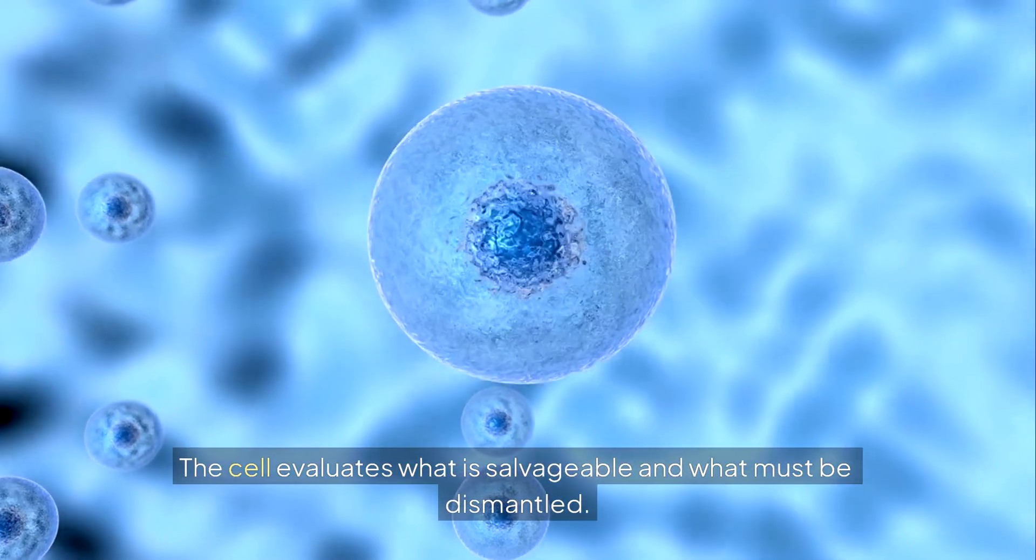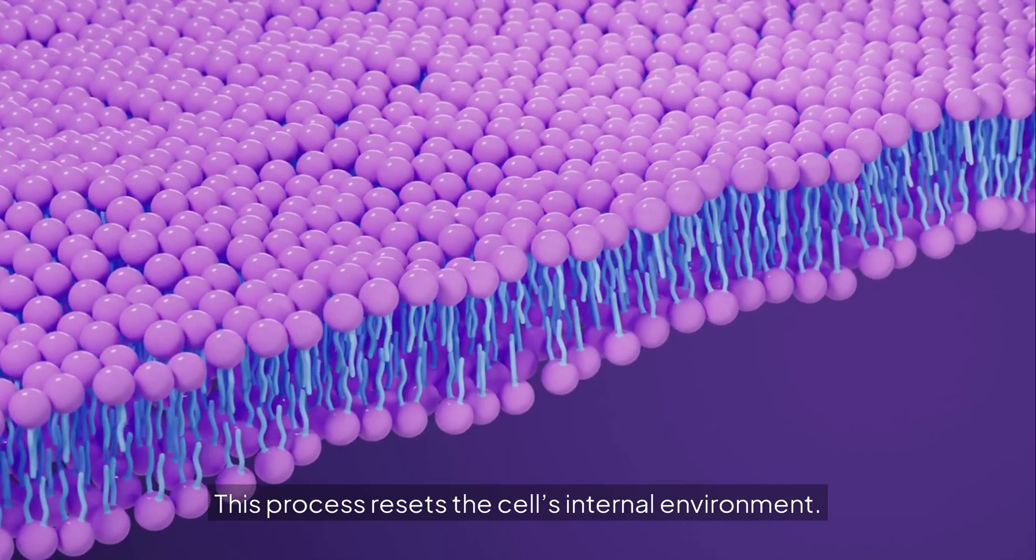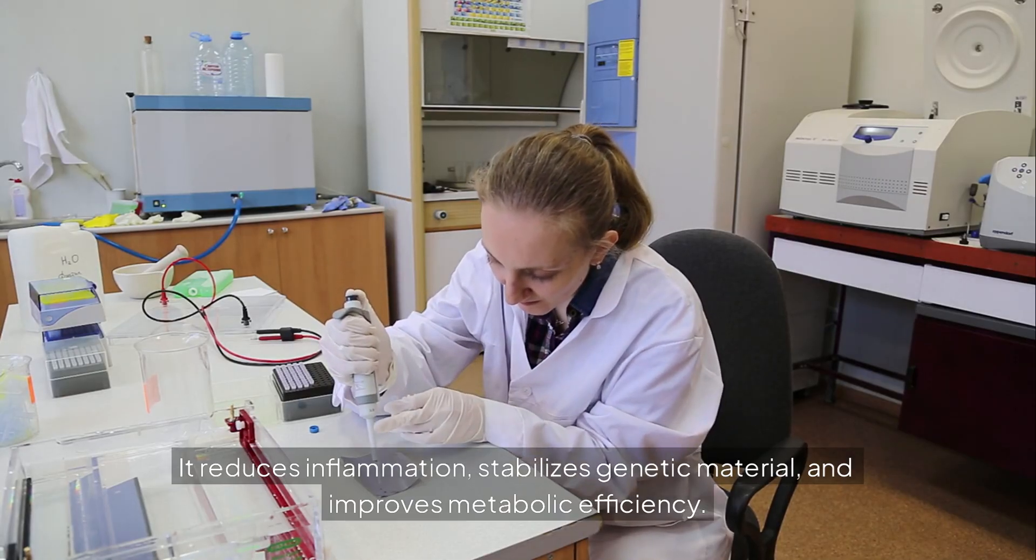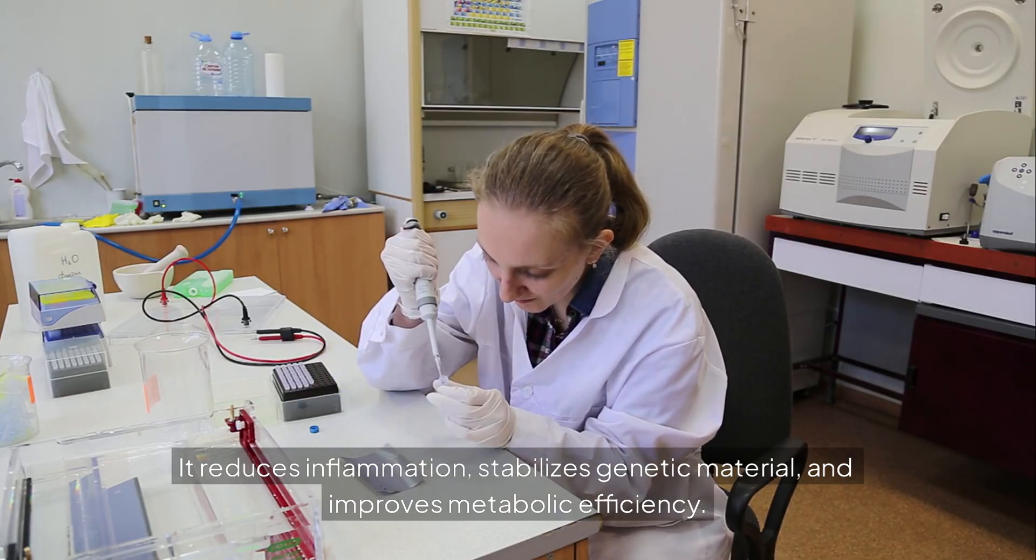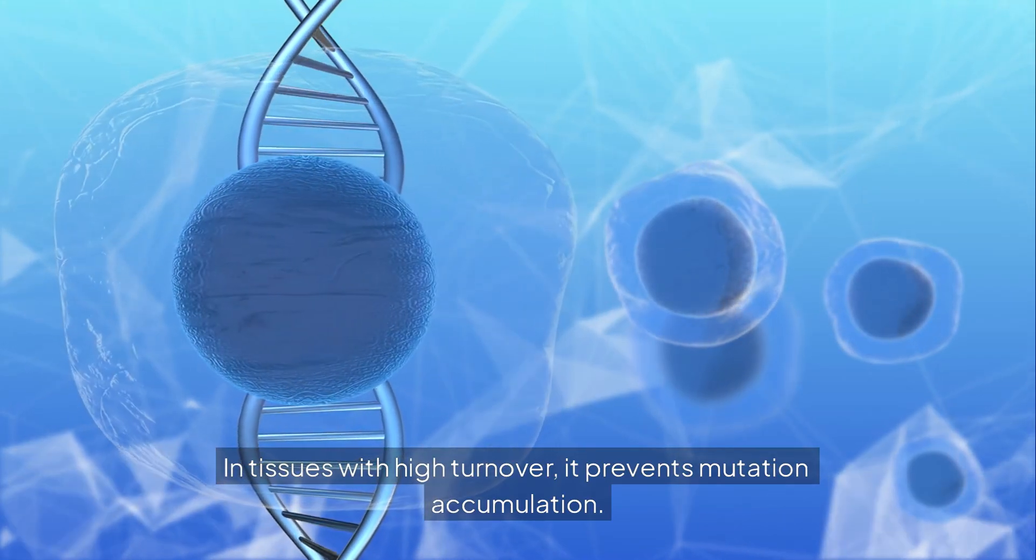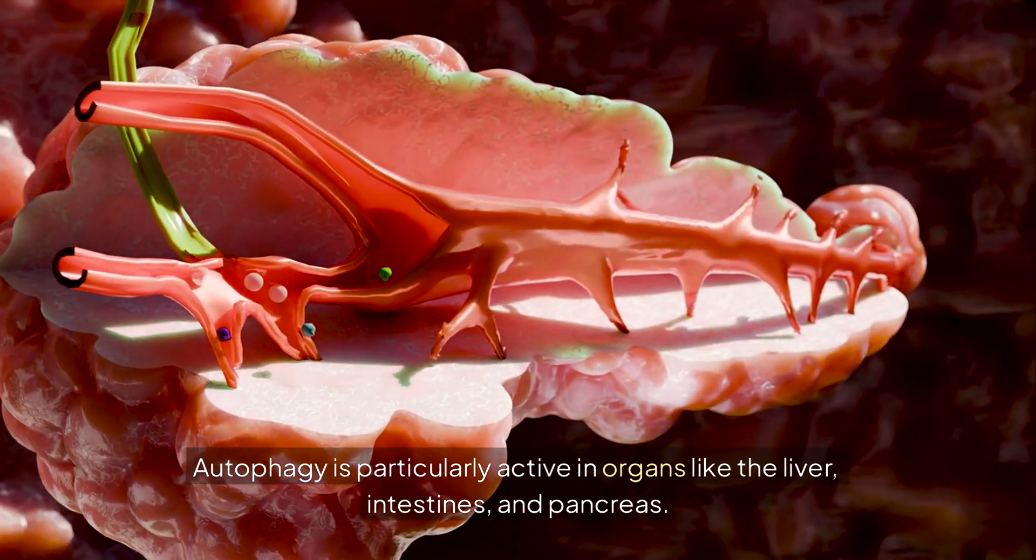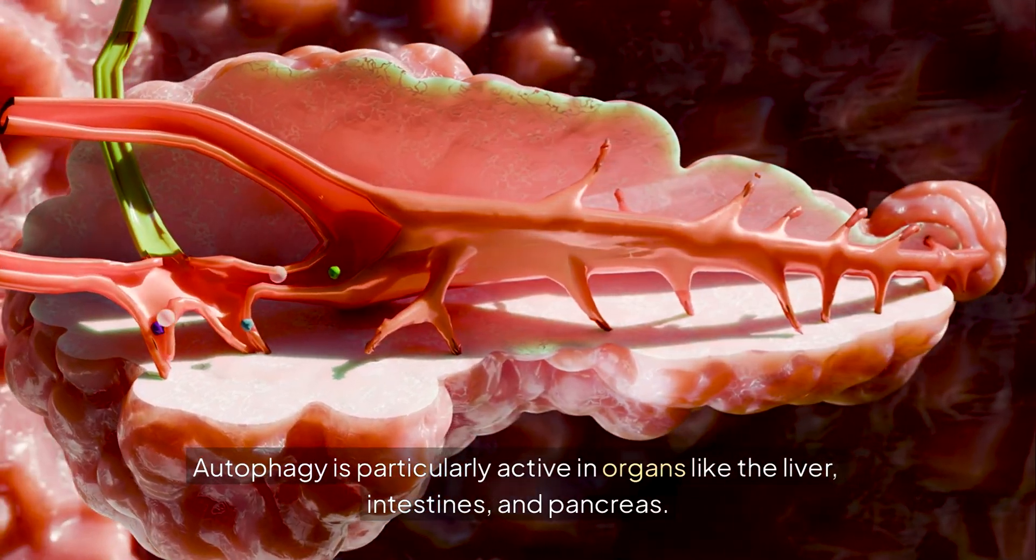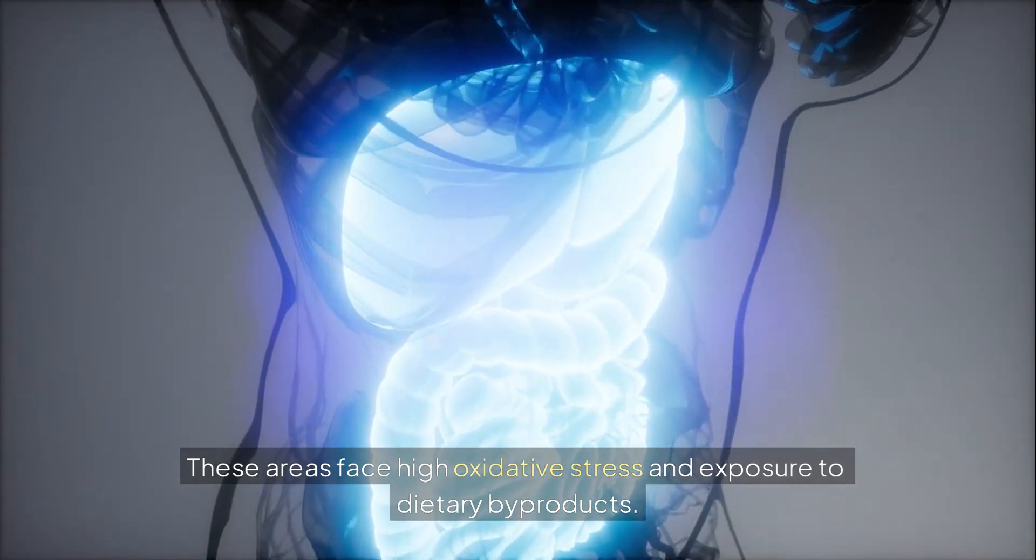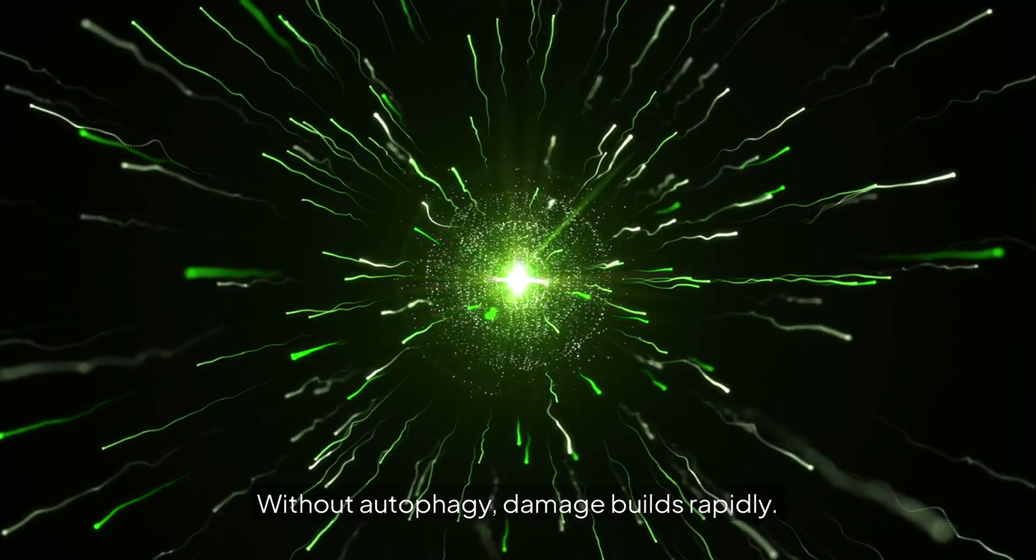This process resets the cell's internal environment. It reduces inflammation, stabilizes genetic material, and improves metabolic efficiency. In tissues with high turnover, it prevents mutation accumulation. Autophagy is particularly active in organs like the liver, intestines, and pancreas. These areas face high oxidative stress and exposure to dietary byproducts. Without autophagy, damage builds rapidly.